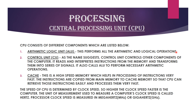The CPU consists of different components. The Arithmetic Logic Unit, or ALU, performs all the arithmetic and logical operations. The Control Unit, as the name suggests, controls other components of the computer. It reads and interprets instructions from the memory and transforms them into a series of signals. For example, when we want to print a word document and click the print button, this instruction goes to the Control Unit, which interprets it and transforms it into signals that connect to the printer and print the document.